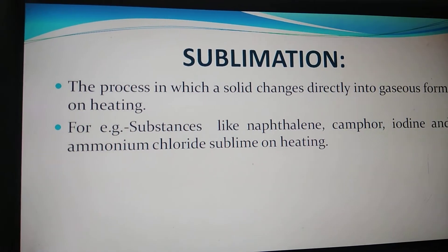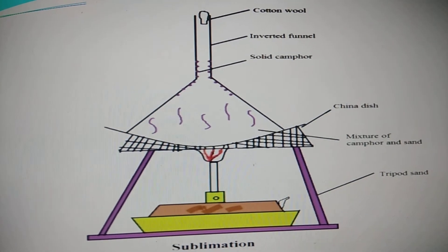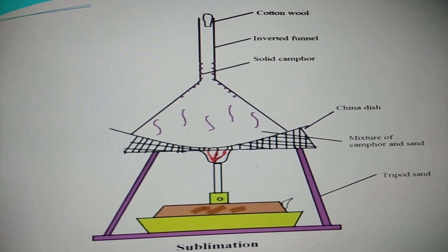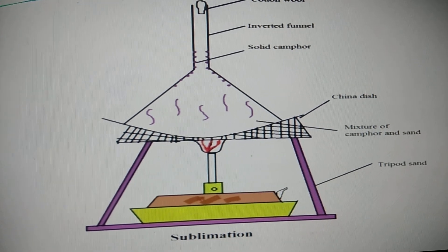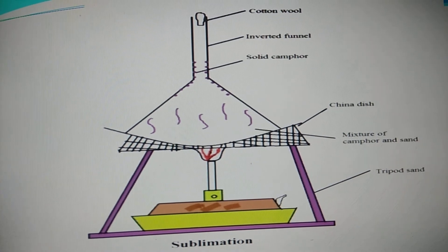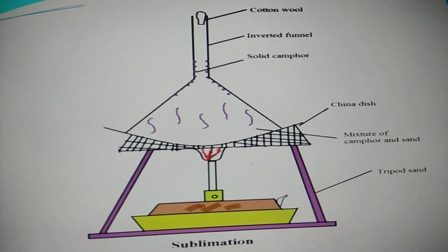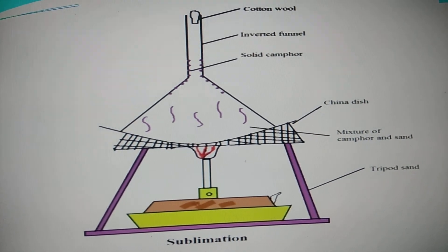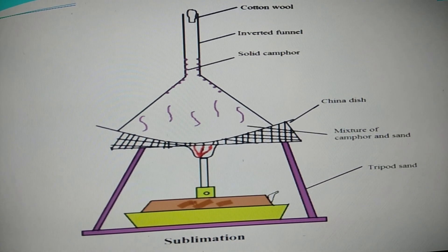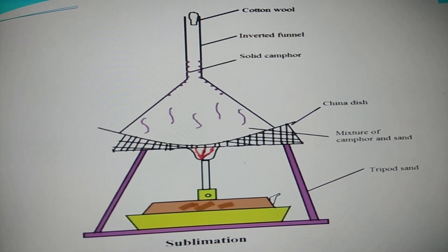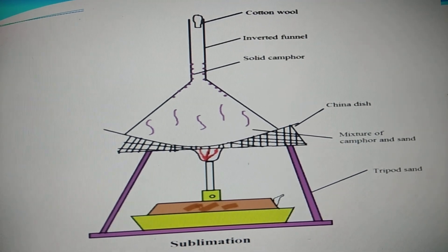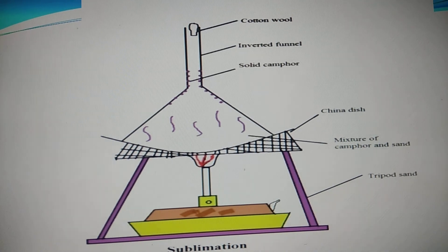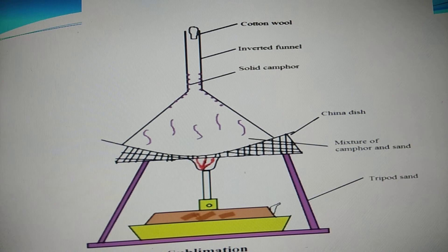To make it clearer, let's do one activity. A mixture of sand and camphor can be separated by the sublimation method. We take the mixture in a china dish and cover it with an inverted funnel whose narrow end has been closed with cotton wool, as you can see on the screen. We heat the china dish on a wire gauze, as shown in the picture. On heating, camphor sublimes into vapors which rise up, and on coming in contact with the walls of the funnel, the vapors cool down and change back into solid state. In this way, sand and camphor are separated — sand is left behind in the china dish.